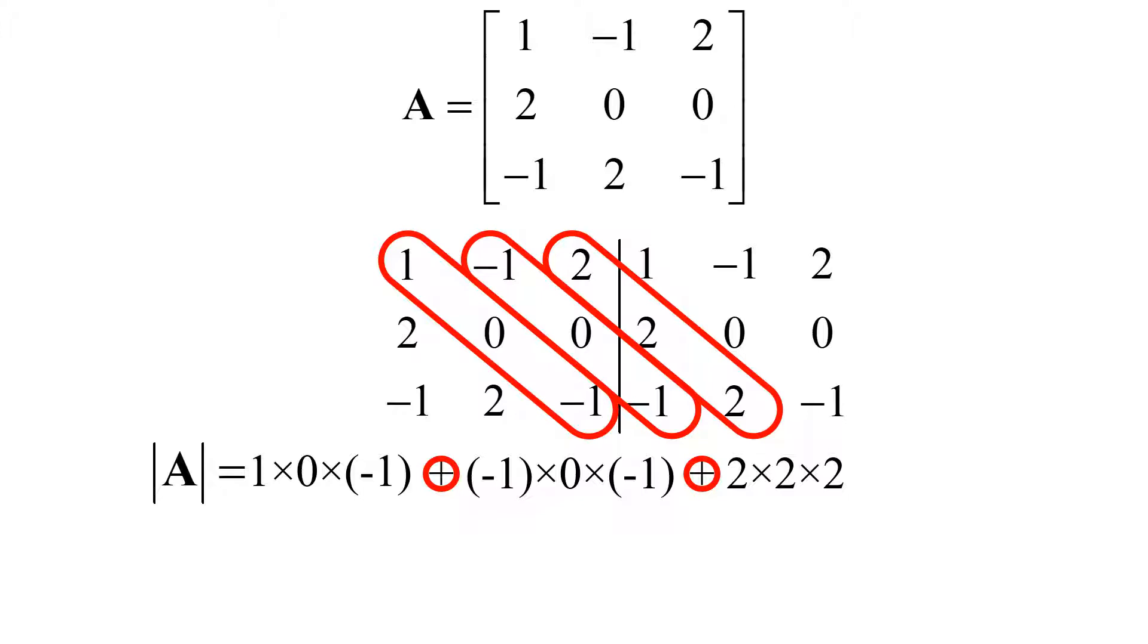Now, for the fourth, fifth, and sixth columns, you can take three elements in the forward slash direction and then multiply them together, but you should subtract it from the previous term.